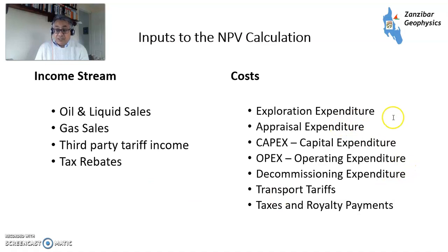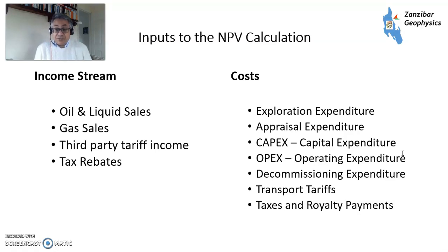Our costs include exploration expenditure, appraisal expenditure, and CAPEX — capital expenditure involved in setting up the field, so that's drilling wells, installing facilities, et cetera. Then there's operating expenditure, which is the daily cost of actually producing — both fixed OPEX and variable OPEX, which is related to production.